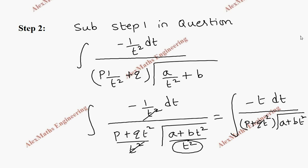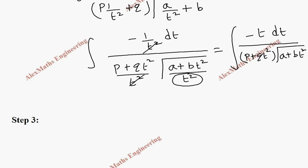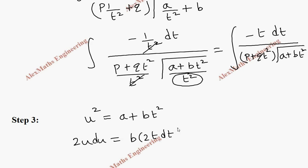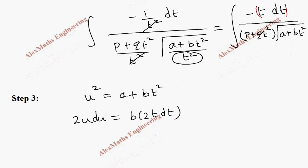In step 3, we take the term inside the square root as u², which is A plus Bt². Differentiating: 2u du equals B times 2t dt. We already have t dt in the numerator, so it can be replaced. We also write t² as u² minus A all divided by B.